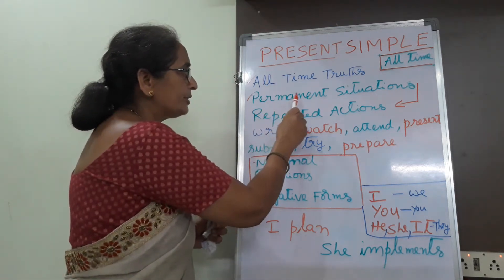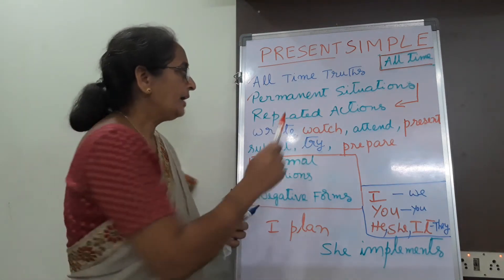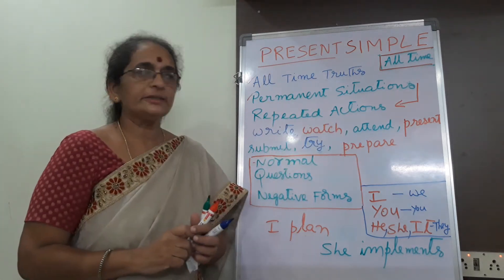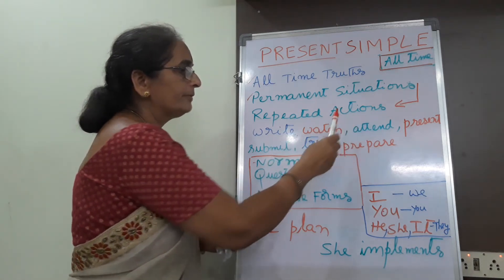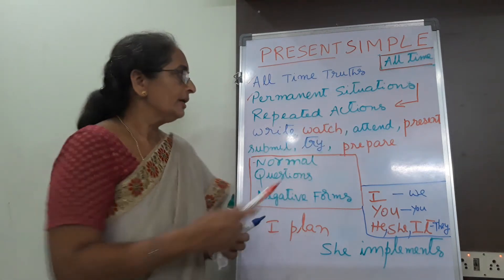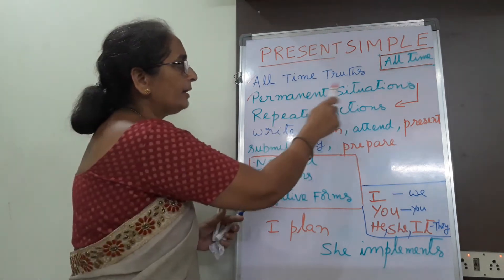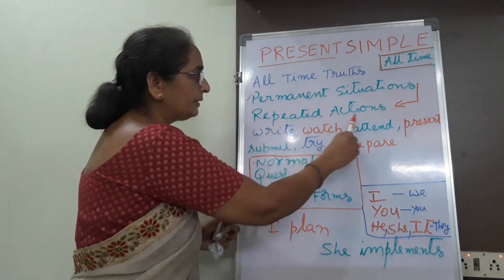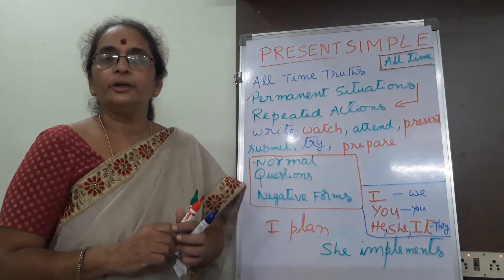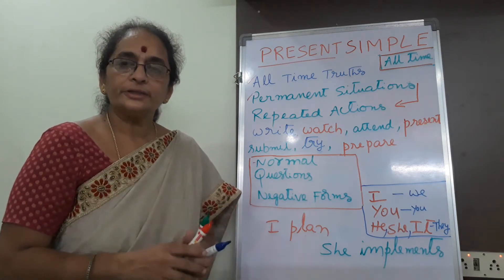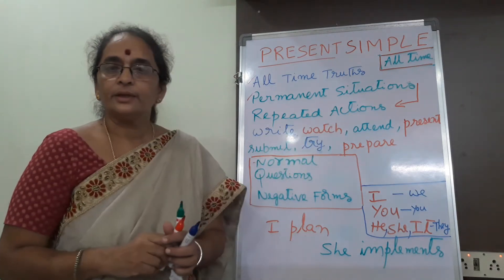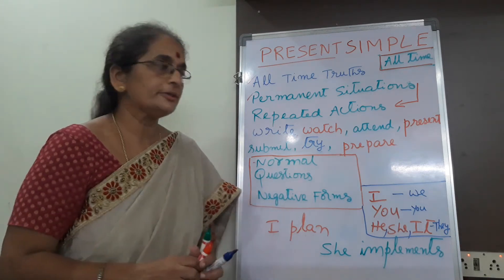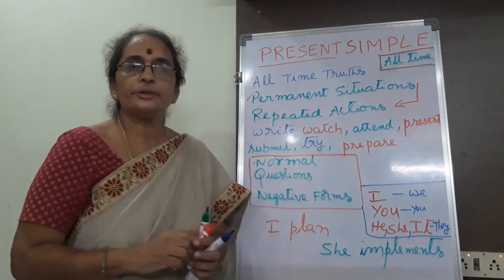All permanent situations are repeated actions. Some repeated actions may be permanent situations. For example, your repeated action — we go for walking — it's a repeated action. It may not be a permanent situation; you may not continue in future. But for the time being, it's a repeated action for you. You prepare projects — that is a repeated action. You may not prepare the project after some days or months; then it may not be a permanent situation.